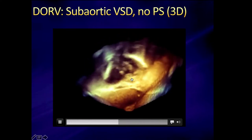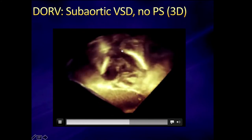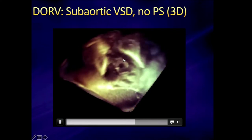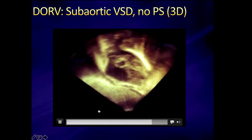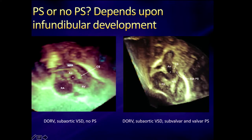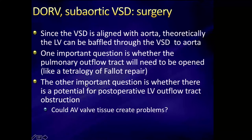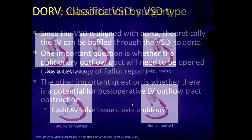This patient is not going to behave like a tetralogy of Fallot — not going to be cyanotic. Quite the opposite: this patient is probably going to be in a fair amount of heart failure. On 3D, rotating this around, there's the VSD itself, the septal band, the pulmonary valve, and the aortic valve. Both semilunar valves are on the right-hand side; the aortic valve is really completely over. Since the VSD is aligned with the aorta, the LV can theoretically be baffled from the VSD to the aorta, and the key question is whether the pulmonary outflow tract will need to be opened, as in tetralogy of Fallot.